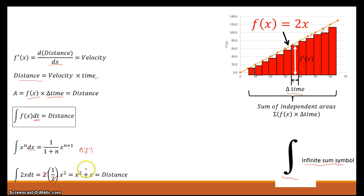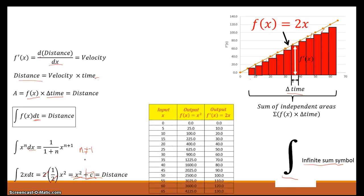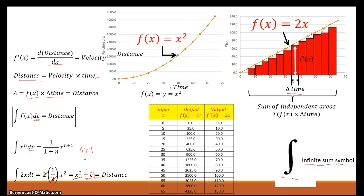You'll also notice I have a plus C here — that's called a constant of integration. What this tells you is that there is an entire family of functions that actually solve this particular differential equation. But one of those functions is our original function. We can see this is the original table and the original graph of distance over time. So this is the basics of taking an antiderivative of a function. In the next video, I'll go through some examples to show you more how this works. This is Professor Cummings — thank you for watching.